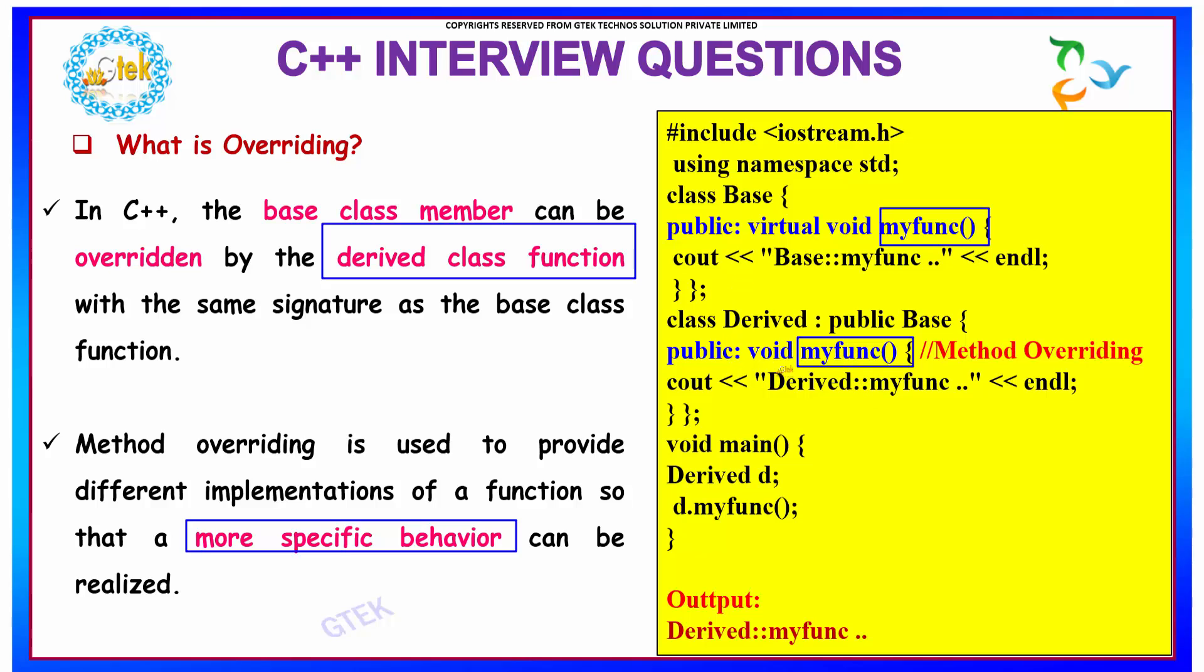this will access the function here and the output will be written here. This is your overridden method. It will have the same name as that of your base class function.